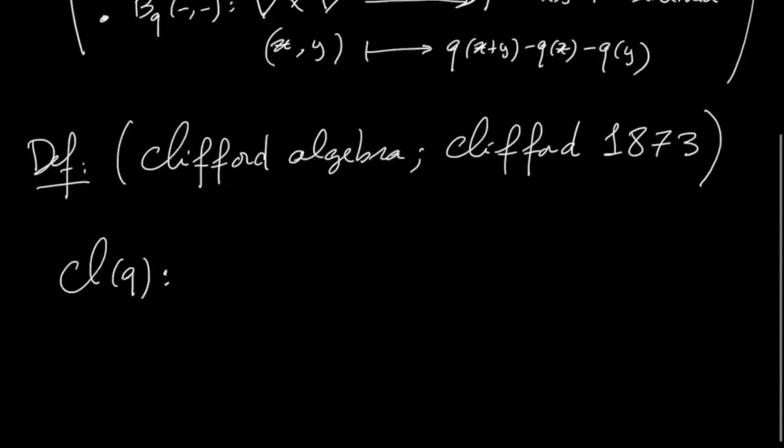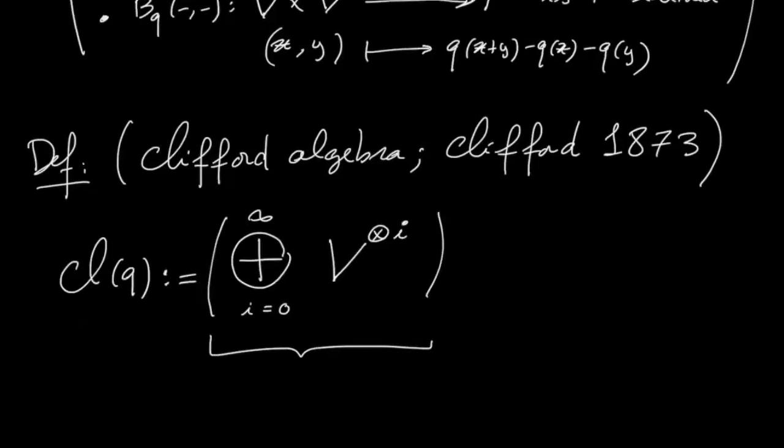So you take simply the tensor algebra, we take this sum, i going from 0 to infinity of all the tensor powers of V. So this is the tensor algebra on the vector space V.